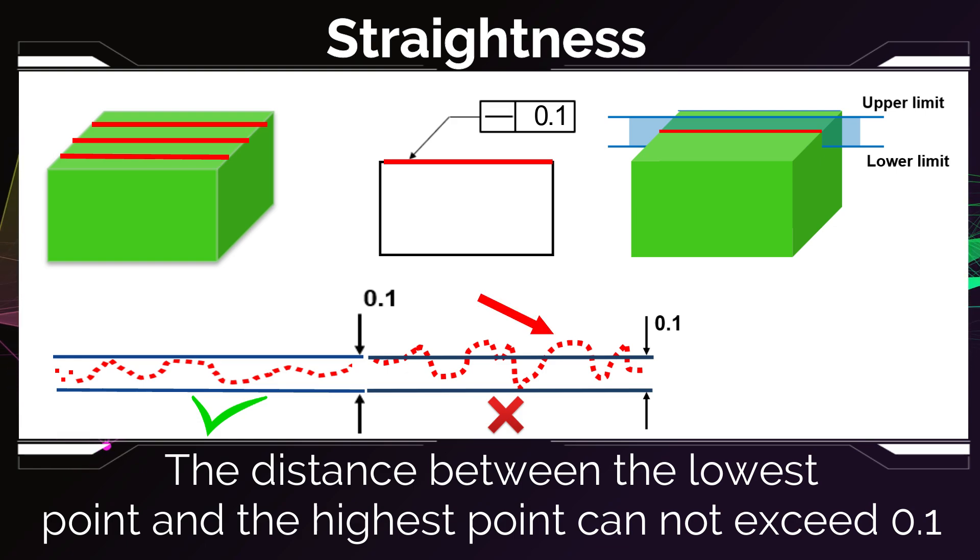Then we have to look at the next line. So we measure the next line and we have these points. And we do the same process. Again, we find the lowest point, and at a distance of 0.1 from it is another line. My measured points have to fall between these two lines.